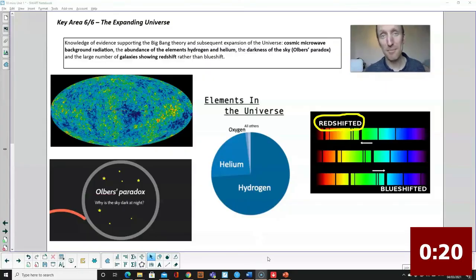Finally, four bits of evidence for the big bang: cosmic microwave background radiation, thought to be the afterglow of radiation left over from the big bang; secondly, Olbers' paradox, you'll have to google it; the abundance of helium and hydrogen; and that most galaxies are redshifted, telling us that the universe is expanding. Boom.